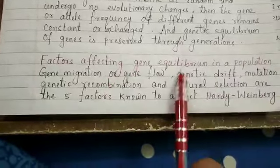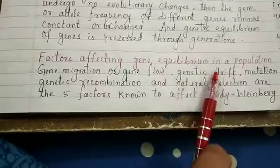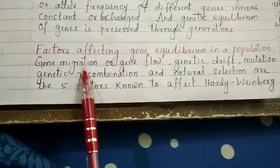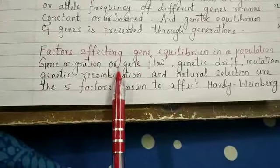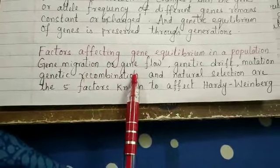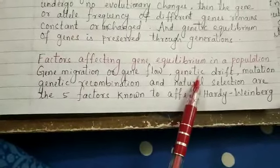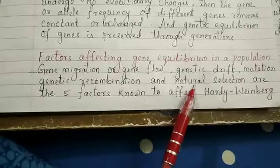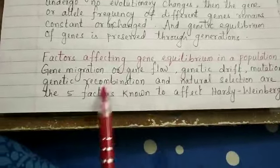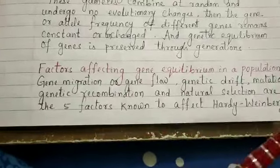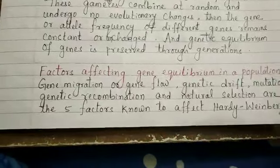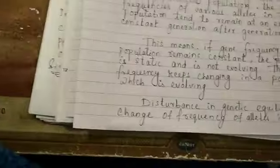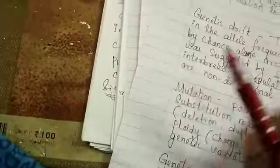What are the factors that affect the gene equilibrium in a population? Basically: gene migration (also called gene flow), genetic drift, mutation, genetic recombination, and natural selection. These are the 5 factors which affect the Hardy and Weinberg's principle of equilibrium.